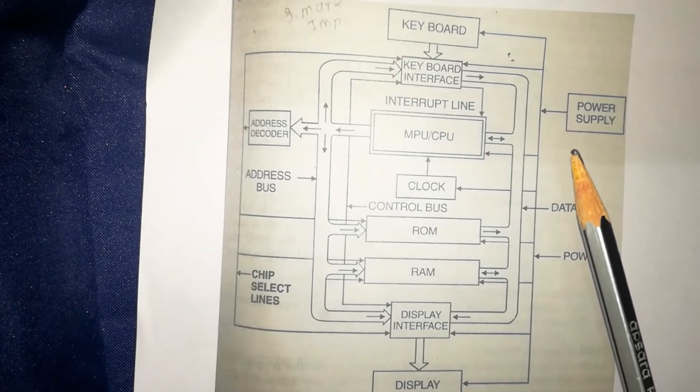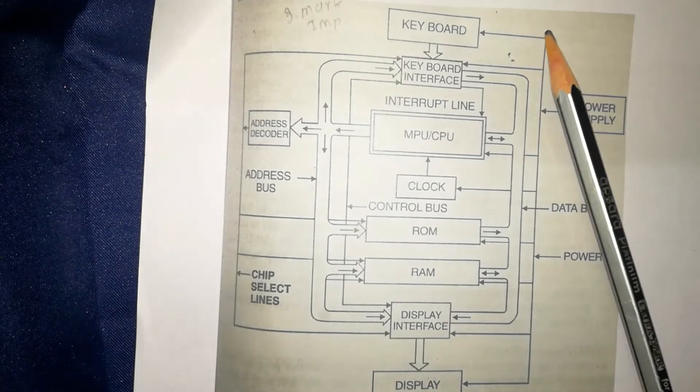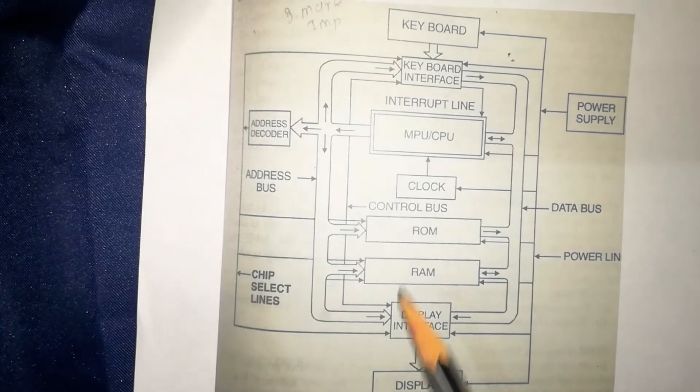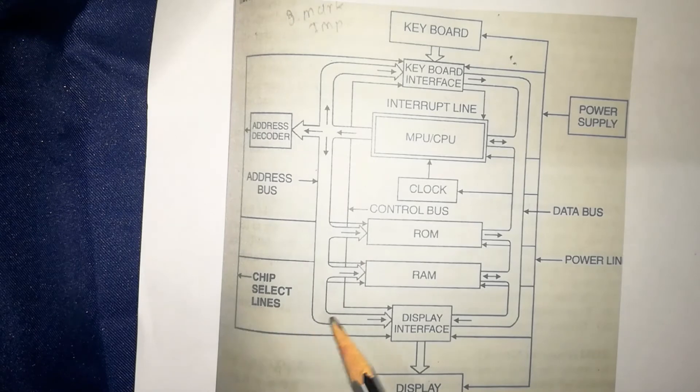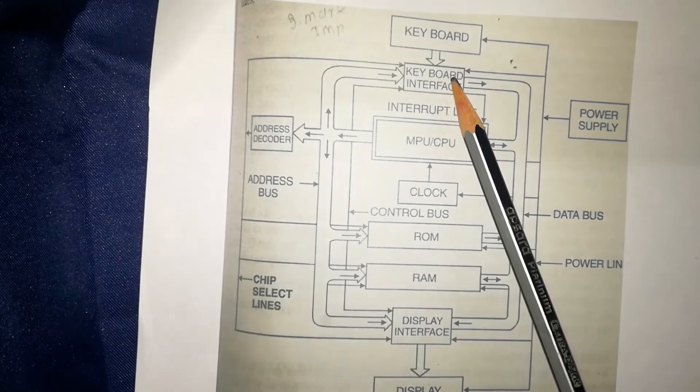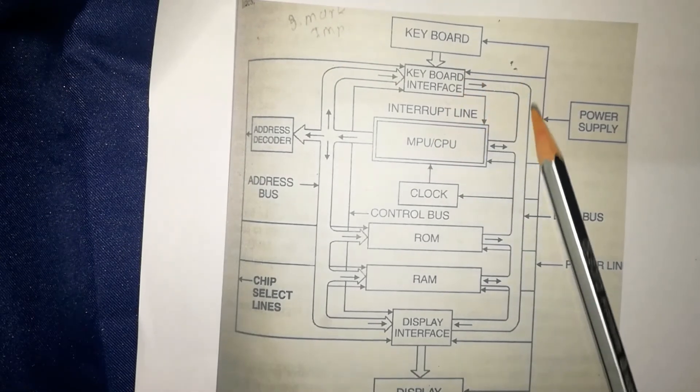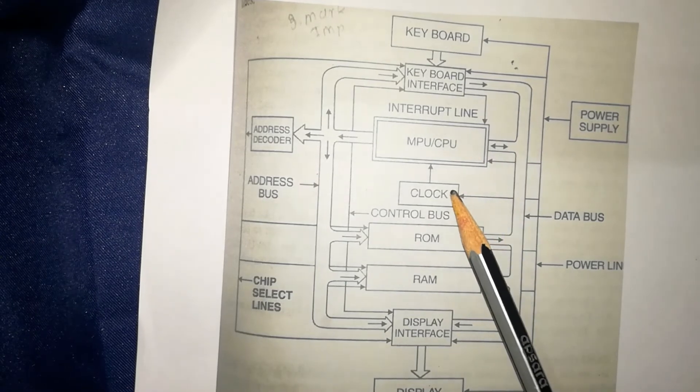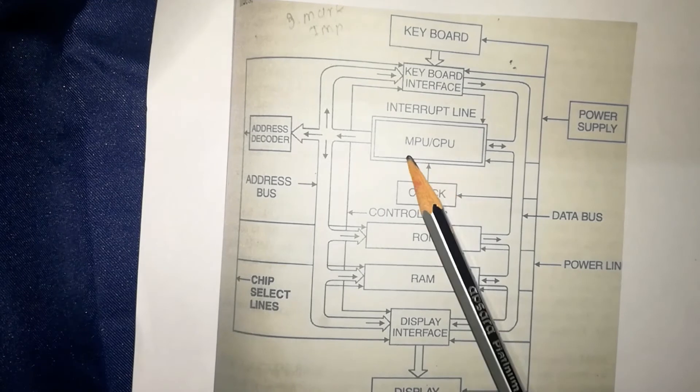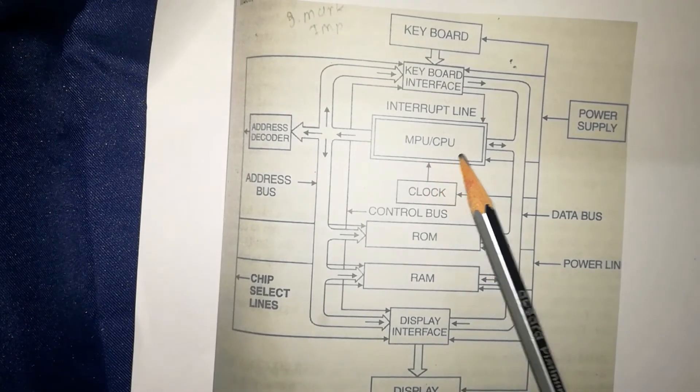After completion of the current work in hand or current instruction, CPU stops the normal execution and jumps to a special group of instructions in its monitor program which gives response to the keyboard data. MPU generates control signals and chip select signals to activate the keyboard interface and tells it to send the data on data bus. Then MPU accepts the data.